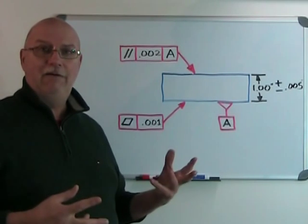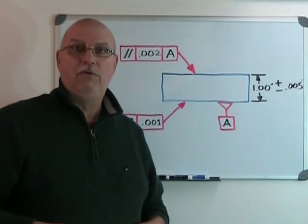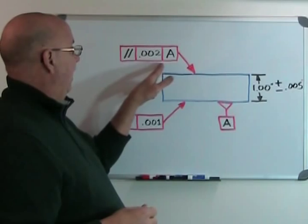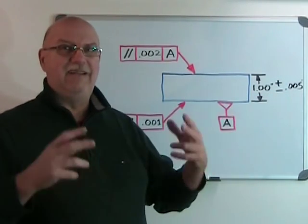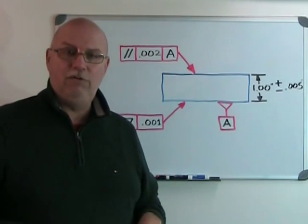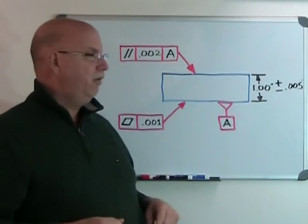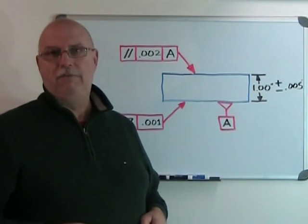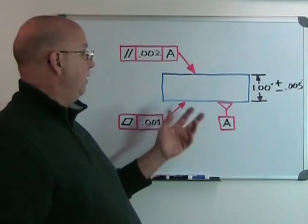Reading the callout: this surface must be parallel to within two thousandths of an inch to datum surface A. With that, we have an accurate part that's easier to produce because we're not working to a few ten-thousandths dimensionally. Without geometric tolerances, we'd have put a very tight dimensional tolerance on the height, hoping for parallel surfaces — which would have been very expensive.